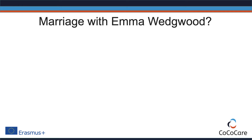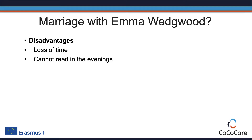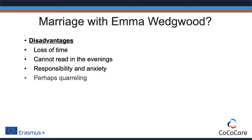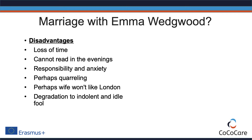Charles Darwin thought that marriage can have clear disadvantages. It might be a loss of time; one cannot read in the evenings anymore. Marriage means responsibility, which can cause anxiety. Maybe the wife will quarrel a lot, or perhaps she won't like life in London. He was also concerned he might become an idle and indolent fool.